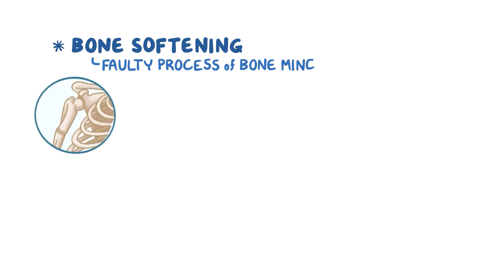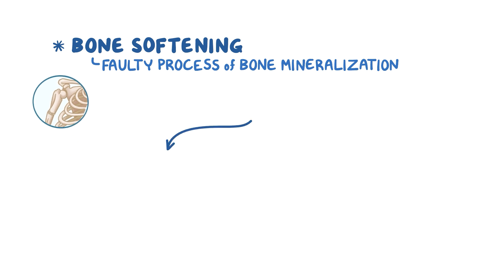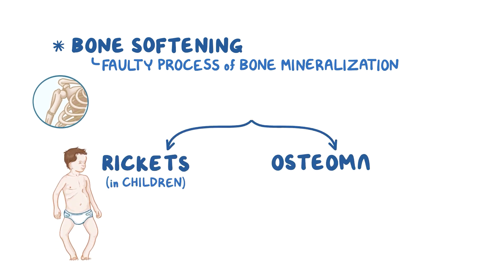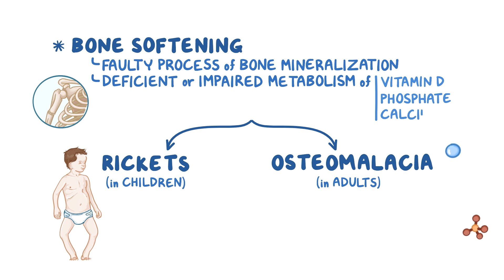Bone softening caused by a faulty process of bone mineralization manifests as either rickets in children or osteomalacia in adults. Inadequate bone mineralization could be due to a deficient or impaired metabolism of vitamin D, phosphate, or calcium.